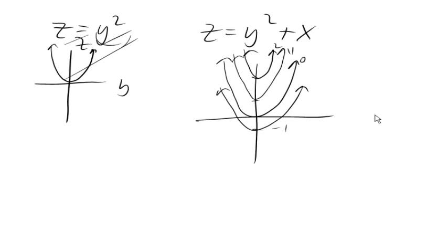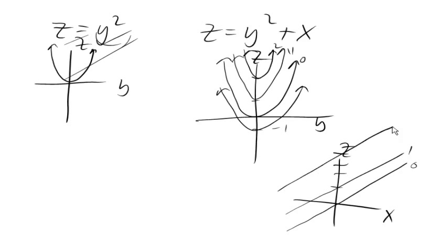Now, this was the trace in y and z again. If we instead looked at x versus z, notice that when y is 0, we would get z equals x. If y was 1, we'd get z equals 1 plus x. If y was 2, we'd get 4 plus x. And we're getting lines in the other direction.